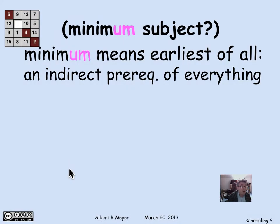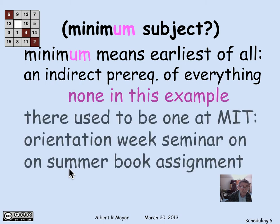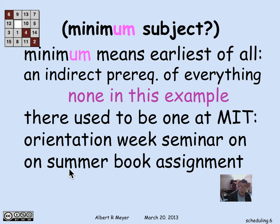You could also ask about a minimum, which is different: a minimum means not only is there nothing before it, but it comes before everything else — the earliest subject in the entire indirect prerequisite chain. There isn't one in this example, but MIT once experimented with an orientation week summer assignment requiring all incoming students to read a book beforehand. It seemed like a great idea to build freshman community, but turned out unsustainable because not enough faculty were willing to run the seminars. So MIT stopped having a minimum subject.